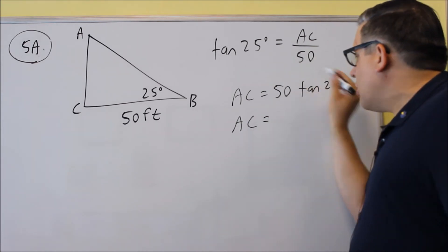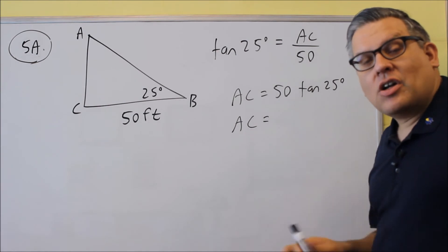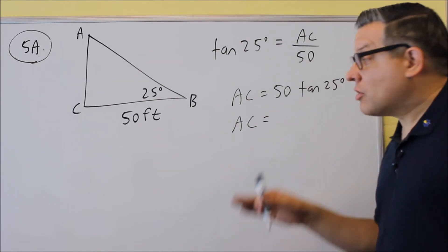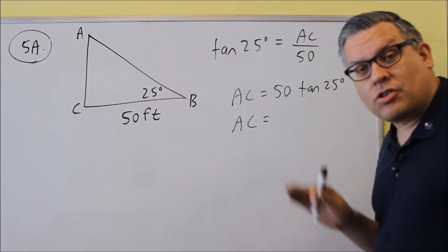To find AC, you're going to put 50 tangent 25 into your calculator. Make sure your calculator is set in degree mode, because otherwise you'll get the wrong answer.